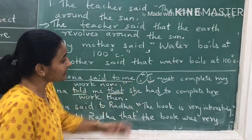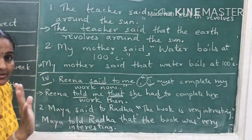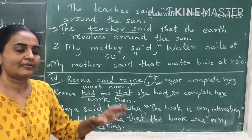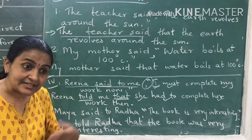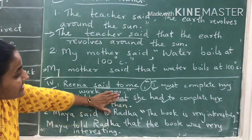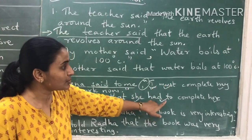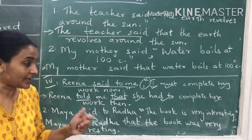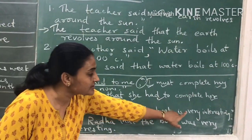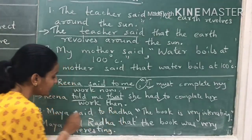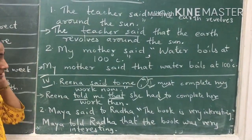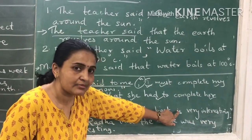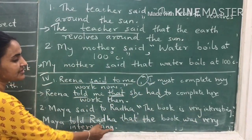See, this sentence has only 6 words but we needed to change 4 words: 'I' became 'she', 'must' became 'had to', 'my' became 'her', 'now' became 'then'. There are sentences where you have to change a lot of words to make it indirect. Next: Maya said to Radha, "The book is very interesting." Both who is saying and to whom are mentioned, so you use 'told'. Maya told Radha that the book was very interesting.